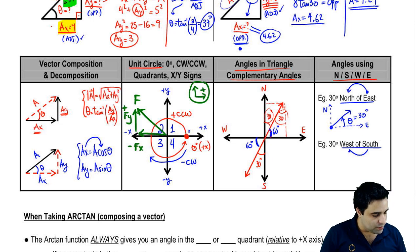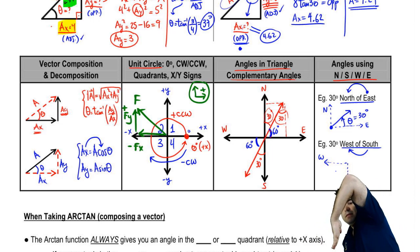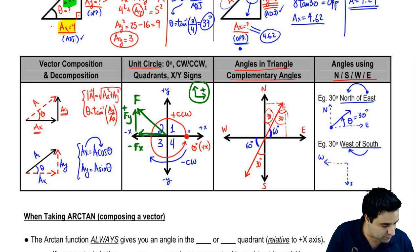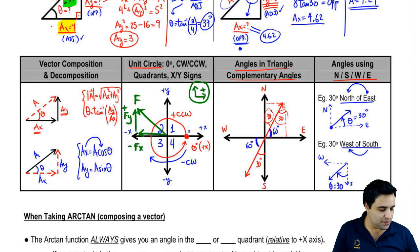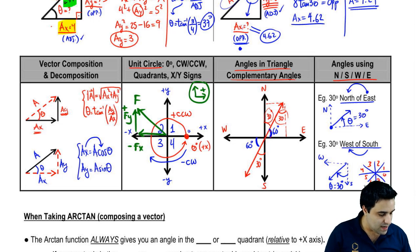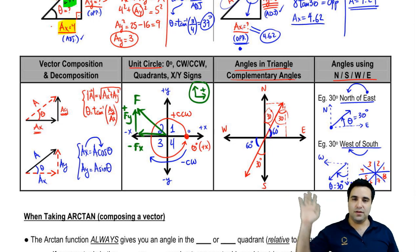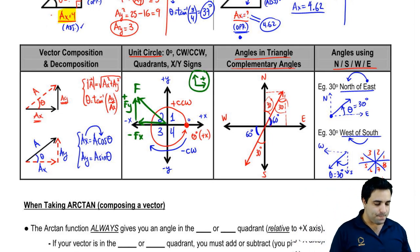For '30 degrees south of west': start going south, then pull toward west. So the vector points down and to the left, with theta equals 30 degrees measured from south toward west. There are eight total variations of these cardinal-direction angle descriptions — all combinations like north of east, east of south, and so on — and you can apply the same strategy to all of them.